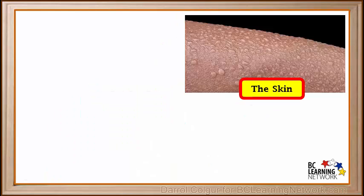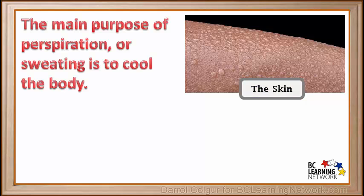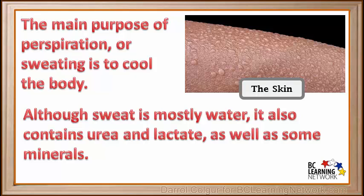Now we'll look at another organ involved in excretion: the skin. The skin has 2 to 5 million sweat glands distributed all over our body, which enable us to perspire. The main purpose of perspiration or sweating is to cool the body when it's too hot — when water in sweat evaporates, it takes heat away from the body. Although sweat is mostly water, it contains dissolved substances such as urea and lactate, which are waste products, as well as minerals including sodium, potassium, calcium, and others.